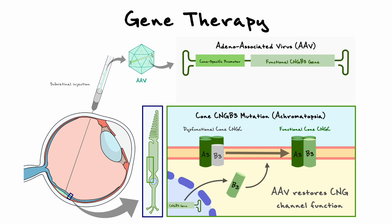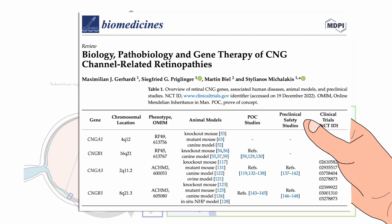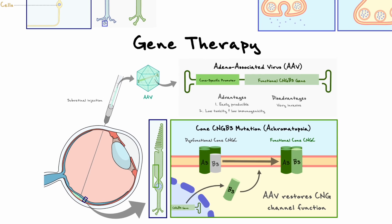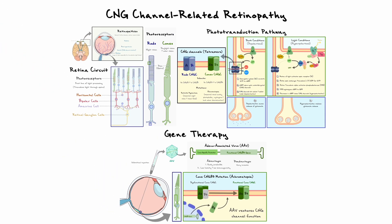The use of AAVs for gene therapy is promising, as it is easy to produce on a large scale and it shows a good safety profile with low immunogenicity and low toxicity. An obvious downside of this procedure is that it can be very invasive. At the moment, gene therapy to cure CNG-related retinopathies is in clinical trials for some of the mutations but is still in proof-of-concept studies for others. This final detail concludes our discussion on CNG-related retinopathies and potential cures for this disease.